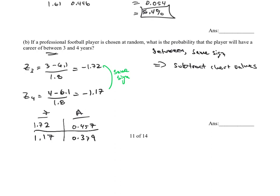And then again, what are we going to do? Because they are the same sign, we need to subtract these two values. So I'll do 0.457 minus 0.379. Doing that, I'm ending up with 0.078. And it says probability. If it wants the probability, it wants the decimal version, not the percentage version. So the probability that they're between three and four years would be 0.078. If they wanted it as a percentage, that would be 7.8%.